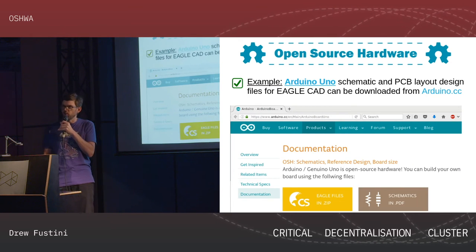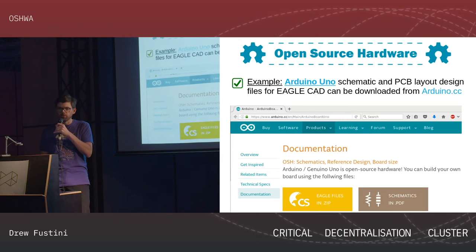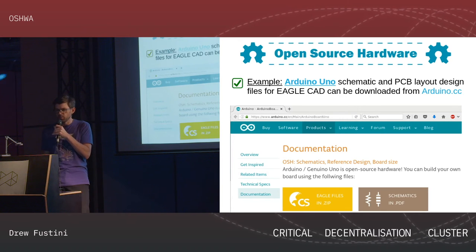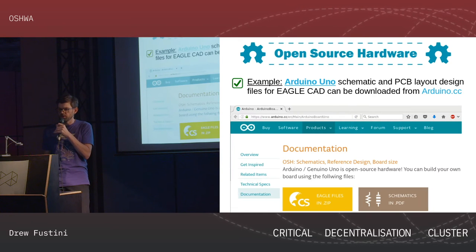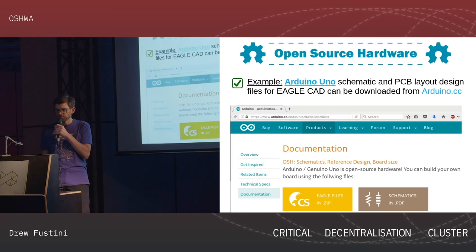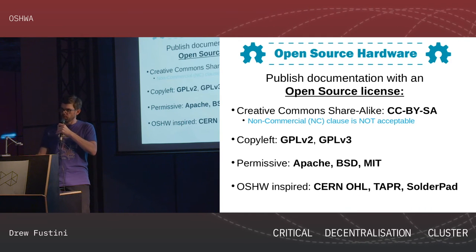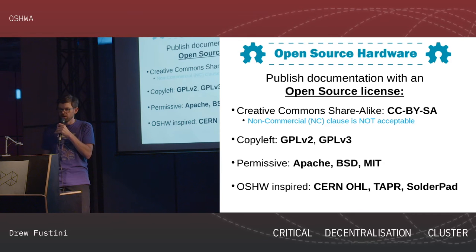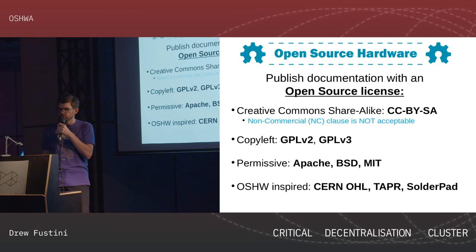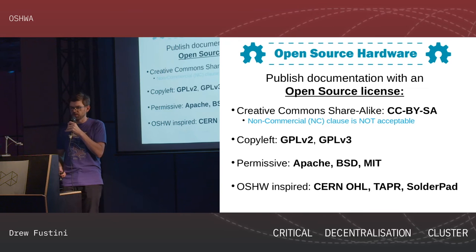So, how do we know that the Arduino is open source hardware? We can go to the Arduino website and download the Eagle design files, which has the schematic and the board layout. When we publish design files for our open source hardware project, we need to use an open source license. There are several different options here.